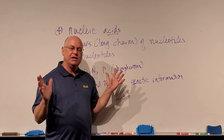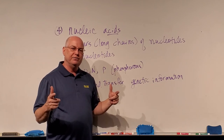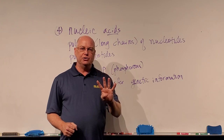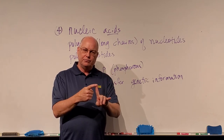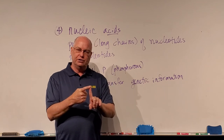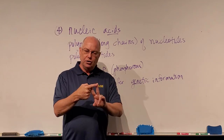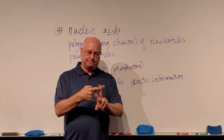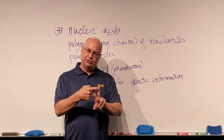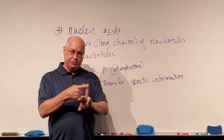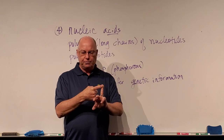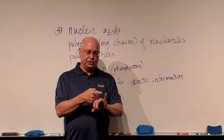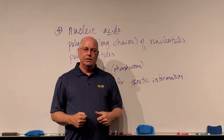That's all I want you to know about nucleic acids for now: they are called polynucleotides or long chains of nucleotides; they're made out of carbon, hydrogen, oxygen, nitrogen, and phosphorus; and they are how we store and transfer genetic information within our cells and from generation to generation. So this is what I want you to know about the four major organic compounds of the human body — know carbohydrates, lipids, proteins, and nucleic acids: their atoms, alternate names, and functions inside the cell.